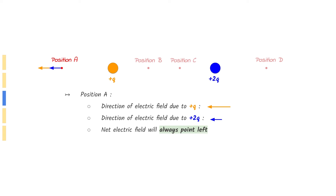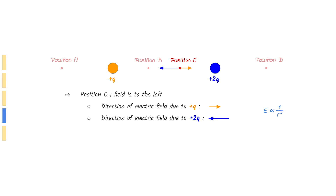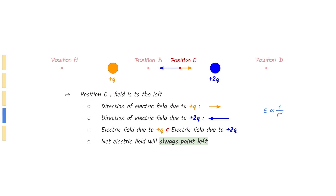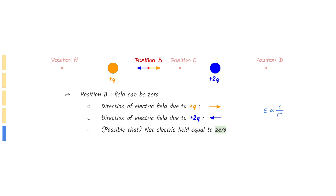At position A, the fields due to the two charges both point to the left, so the net electric field will always point to the left. At position D, the fields due to the two charges both point to the right, so the net electric field will always point to the right. At position C, the field due to 2Q will be greater than the field due to Q since 2Q has the greater charge and the position is closer to 2Q. As a result, the net electric field will always point to the left. In position B, the field produced by 2Q is weaker since the distance is greater. Therefore, it is possible for the two fields to have the same magnitude and cancel each other out, resulting in zero net electric field.